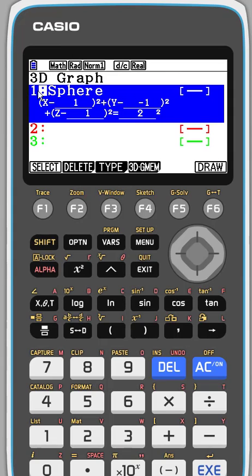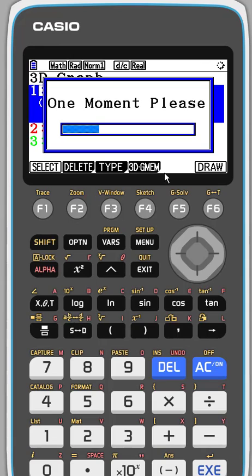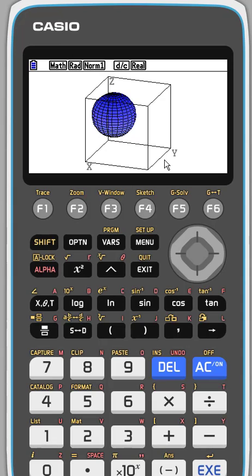Now I want to draw, so I want to make sure my graph's on. You can see that it is here. It's been selected. So we're going to hit draw. It takes a little bit, you know, because it's 3D.